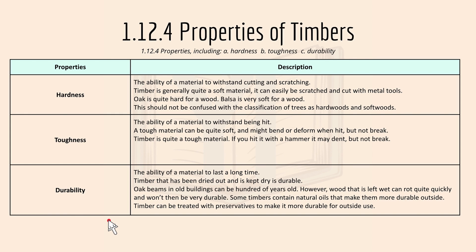Durability is the ability of a material to last for a long time. Timber that has been dried out and kept dry is durable, because moisture inside non-dried timber causes it to erode easily. Oak beams in old buildings can be hundreds of years old; however, wood left wet can rot quite quickly and won't be very durable. Some timbers contain natural oils that make them durable outside, and timber can also be treated with preservatives or finishes to make it more durable for outdoor use.